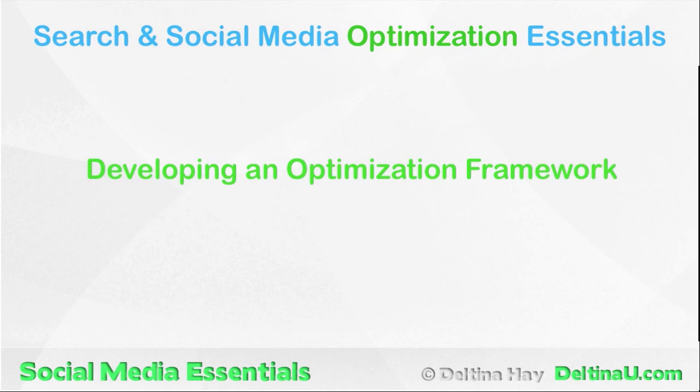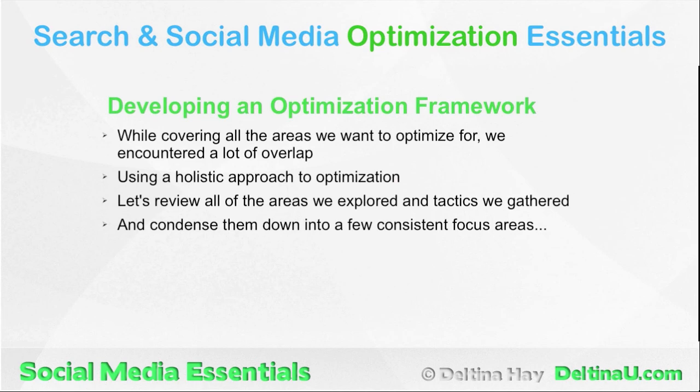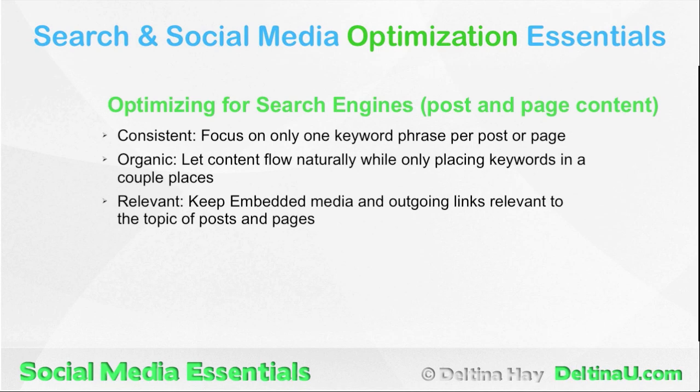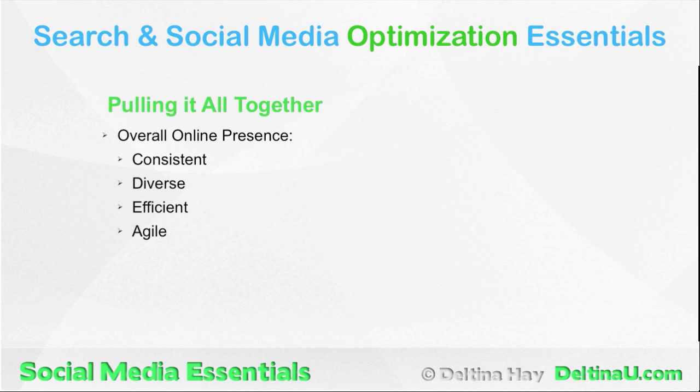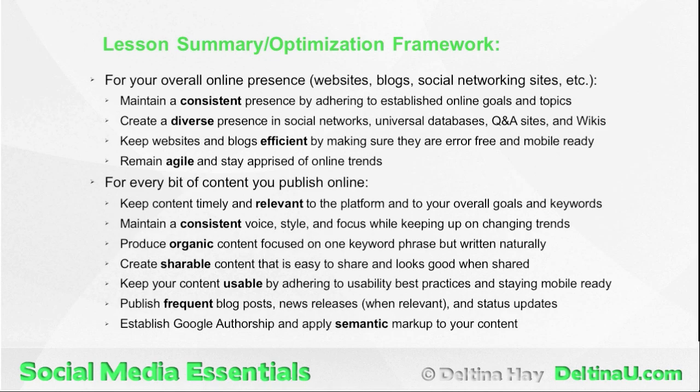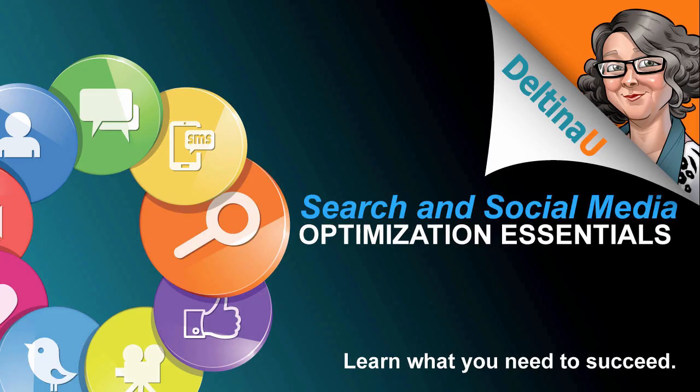Now we are ready to pull it all together and develop an overall optimization framework, by looking at all the areas we covered and condensing the tactics down into consistent focus areas. We look at the main focus areas of optimizing for search engines, social media, mobile, sharing, and conversion, then pull it all together into tactics that can be applied to your overall online presence and to online content, wrapped up into a manageable framework we can apply to everything. So get ready for the most valuable optimization course you will ever take in Search and Social Media Optimization Essentials.